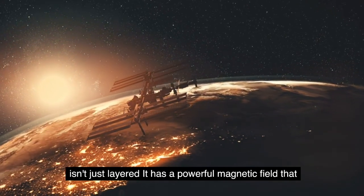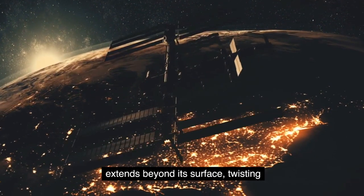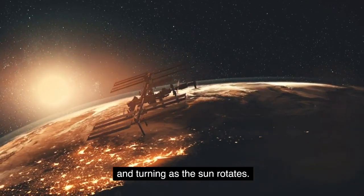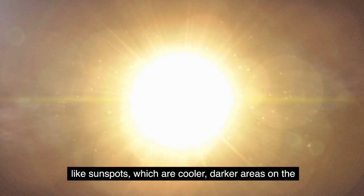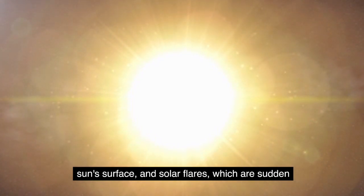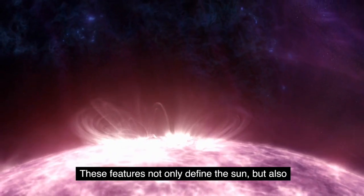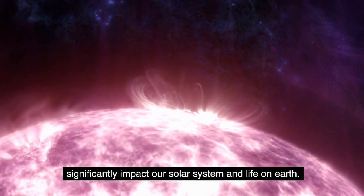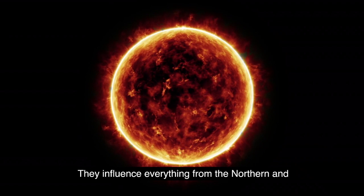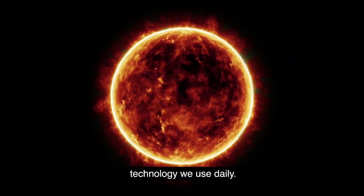But the sun isn't just layers, it has a powerful magnetic field that extends beyond its surface, twisting and turning as the sun rotates. This magnetic field leads to fascinating solar activities like sunspots, which are cooler, darker areas on the sun's surface, and solar flares which are sudden, powerful explosions that release a burst of radiation. These features not only define the sun, but also significantly impact our solar system and life on earth. They influence everything from the northern and southern lights, to our planet's climate, and even the technology we use daily.